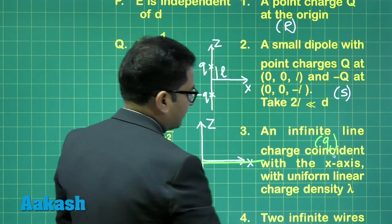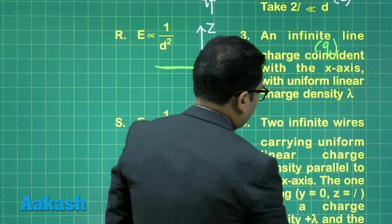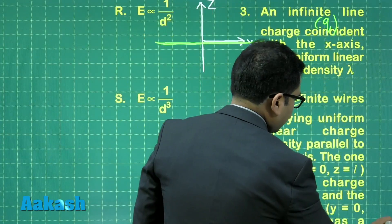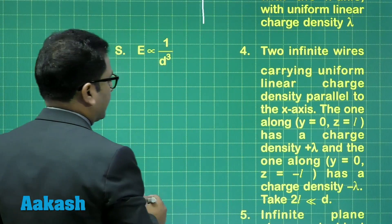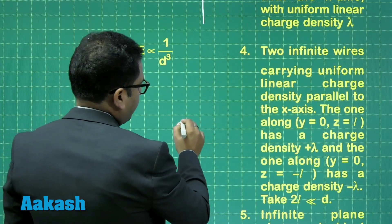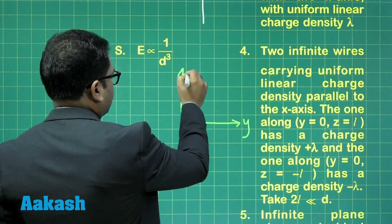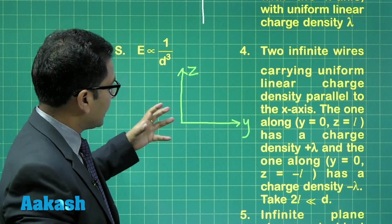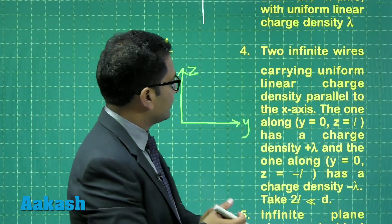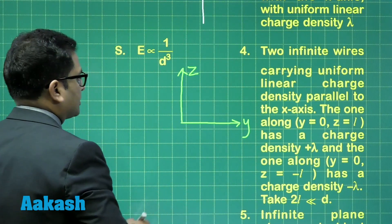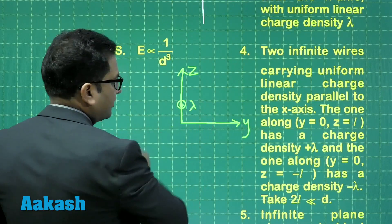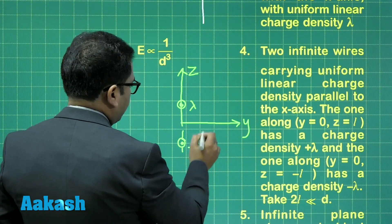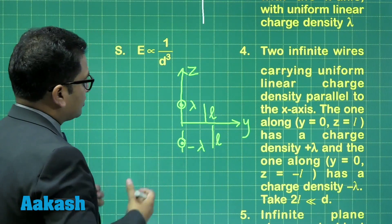Next, two infinite wires carrying uniform linear charge density parallel to the X-axis. This requires some calculation. Taking the X-axis out of the plane, with Y and Z axes in the plane: one wire is at y=0, z=L with charge density +λ, and the other is at y=0, z=−L with charge density −λ.